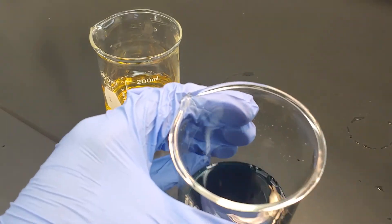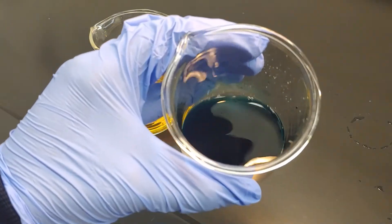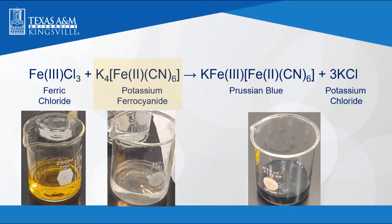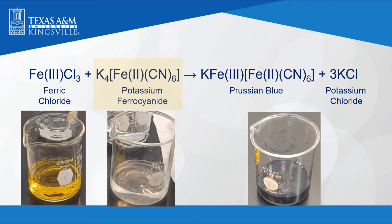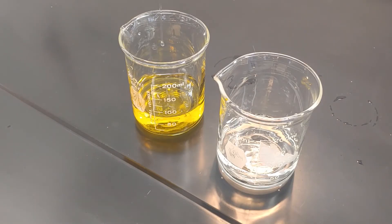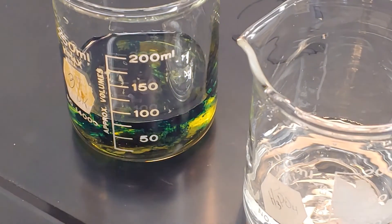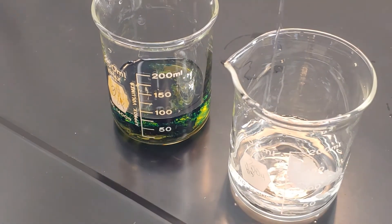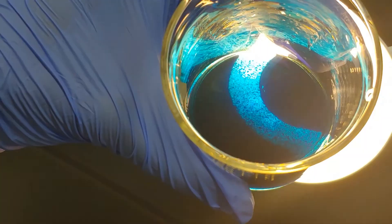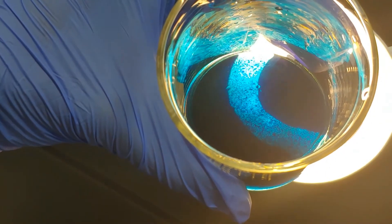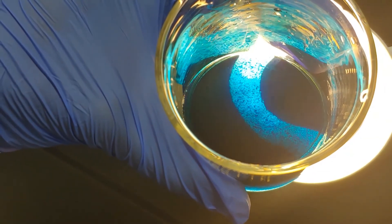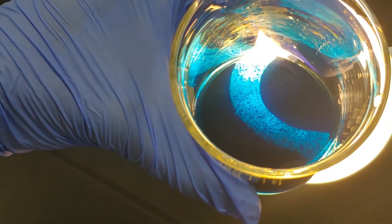So now we are going to see what happens when we add potassium ferrocyanide to an excess of ferric chloride. As you can see here, especially with the help of the light, the solution is not completely dissolved.